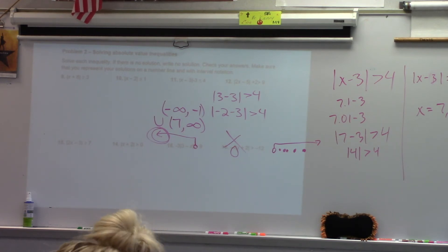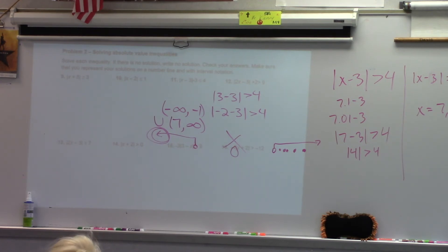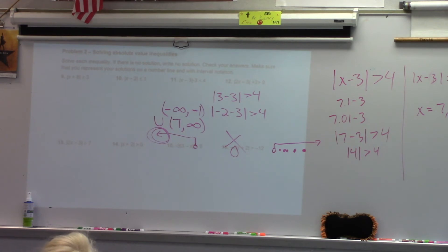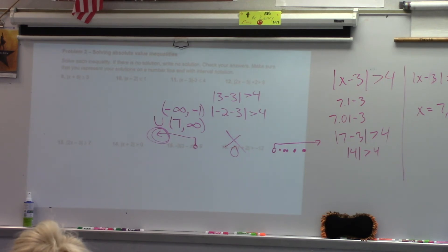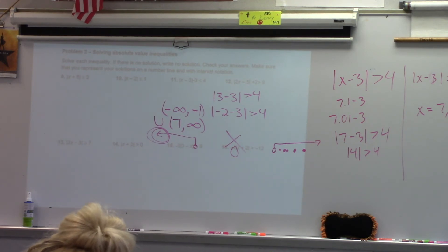I caution you heavily to do an equation first. For example, if I look at number 11 — the absolute value of x minus 3 minus 3 is less than or equal to 4 — can I split this up as it currently is? No, because the absolute value is not by itself. So I make an equation, get the absolute value on its own: the absolute value of x minus 3 equals 7 because I added that 3. Now I can easily split it up. The solution in interval notation would be every number from negative infinity up to negative 11, and then every number from negative 5 to infinity.